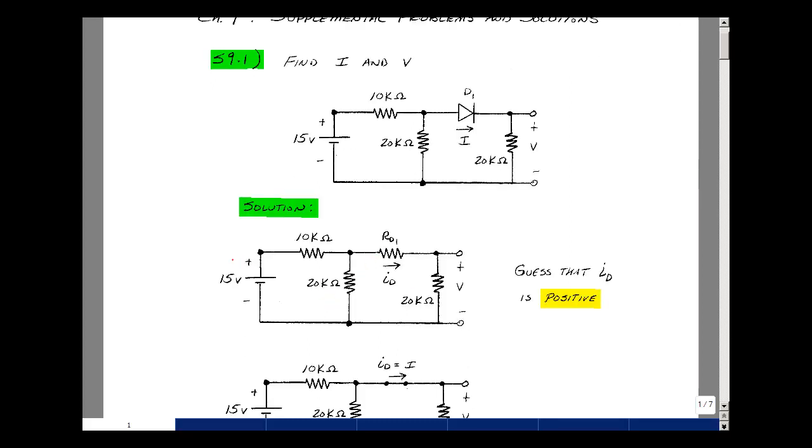The resistors can only absorb power, so current has to come out of the battery, come back this way, or come back this way. Current is flowing from the anode to the cathode, and so I'm going to guess that this is a short circuit.